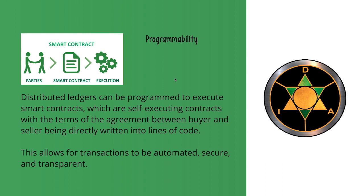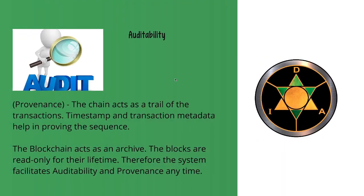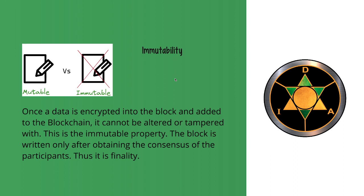That concludes this fourth module. Let's run through what we've learned. We started by running through all the functional and emerging characteristics that we are observing with distributed ledger technologies, then focused on three of them: auditability, programmability, and immutability, talking at length about those to make sure we grasp what they are meant for.